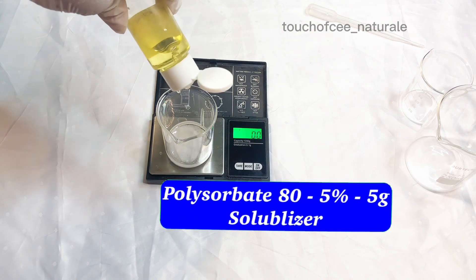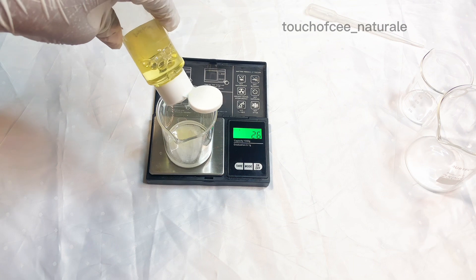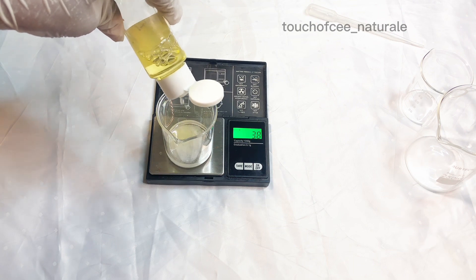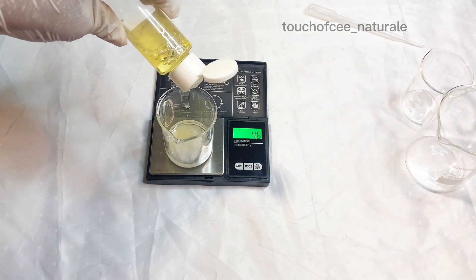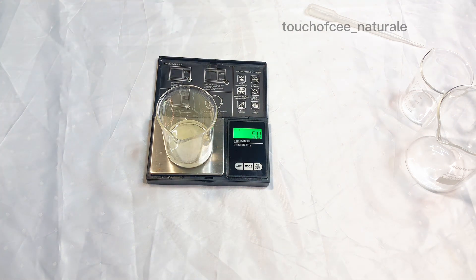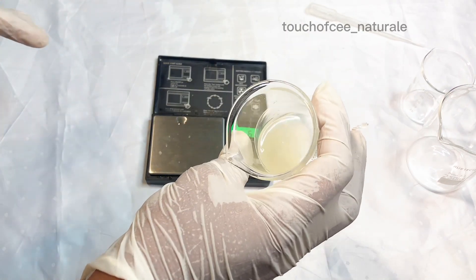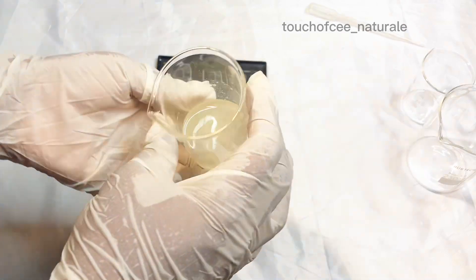Polysorbate 80 is a solubilizer. This solubilizer is going to ensure that my melted and dissolved salicylic acid in the propylene glycol stays that way. Sometimes when you use acids like salicylic acid, citric acid and the rest in making formulations, you find out that they re-crystallize much later on.